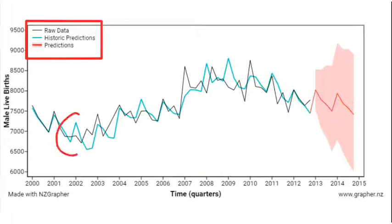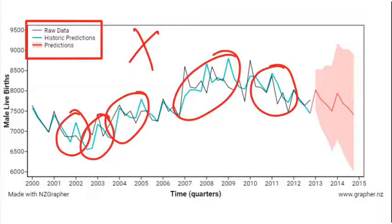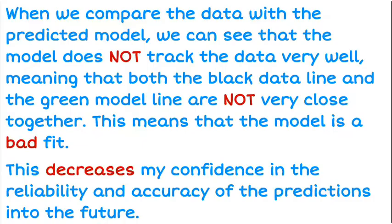And in this case there are quite a number of places where the data does not fit very well at all. And so this is what we need to identify. First of all we're going to say overall this is not a good fit. And then we're going to give some examples of where the model doesn't fit as well, and what that does is demonstrate that you understand what it is that you're looking for.